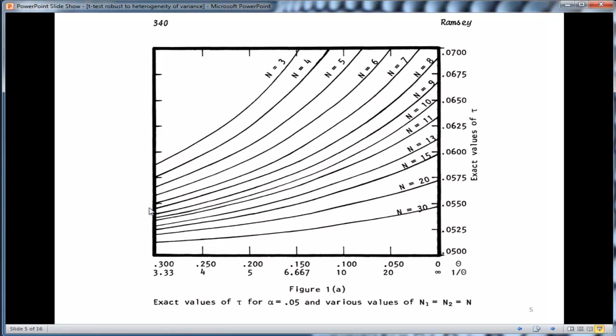Here's a graph, a very informative graph that Ramsey reported in the paper. Let me explain the key results from this. On the right side of the graph on the x-axis here, we have the alpha level, and we're trying to keep things at .05 ideally, but we're willing to accept up to .06. Something's considered robust up to .06.